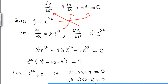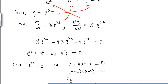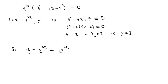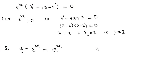So we have two possible values of λ: λ₁ = 2 and λ₂ = 2 — that is, λ = 2. Our guess solution is y = e^(λx) = e^(2x). We can call y₁ = e^(λ₁x) = e^(2x).